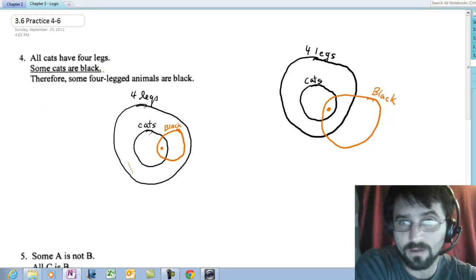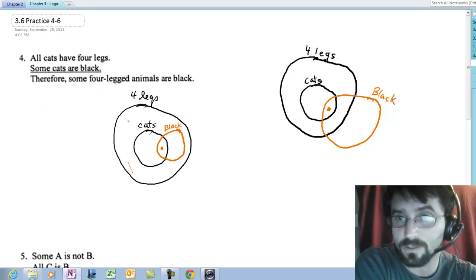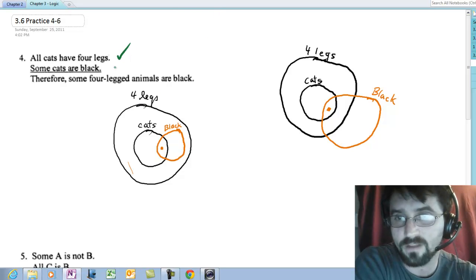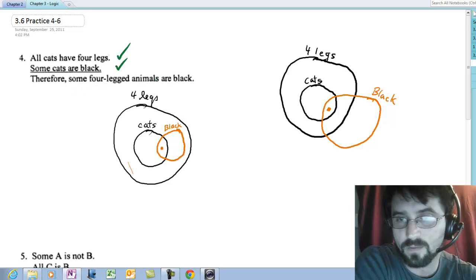Moving here, have I drawn the first premise in both of my pictures? Yes, I have. Have I drawn the second premise in both of my pictures? Yes, I have. Therefore, some four-legged animals are black. So is that going to be true?